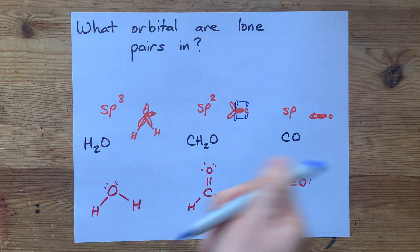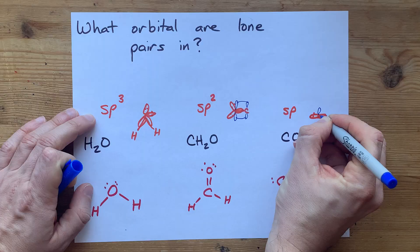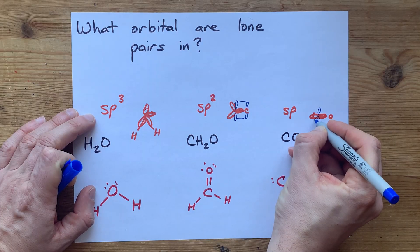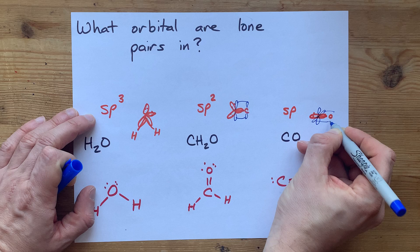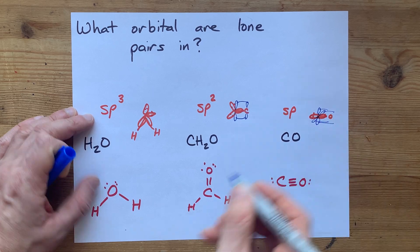One of them holds the lone pair, because lone pairs are in the hybrid orbitals. And then there's two extra unhybridized p orbitals. There's one, and here's a second one in the third dimension, making the two pi bonds.